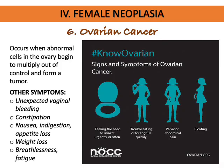Ovarian cancer occurs when abnormal cells in the ovary begin to multiply out of control and form a tumor. Symptoms can be easily overlooked as they mimic other conditions — these include unexpected vaginal bleeding, constipation, nausea, indigestion, appetite loss, weight loss, breathlessness, and fatigue.